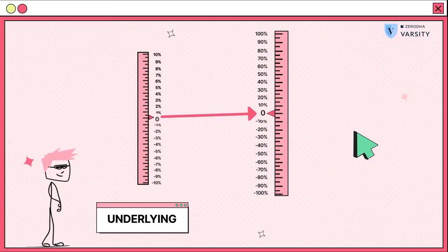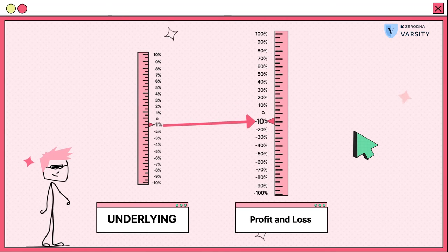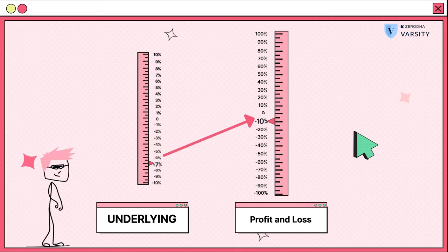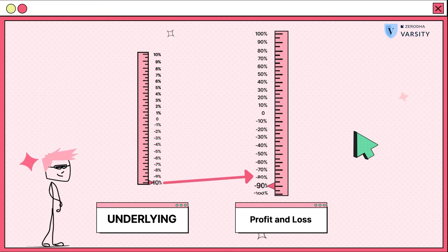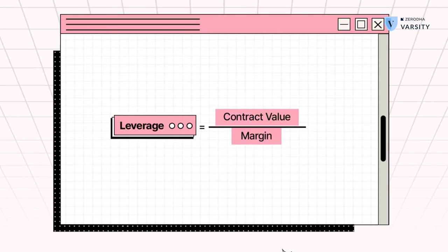This means for every 1% move in the underlying, you will experience a 10% profit or loss on your initial investment. So a 10% movement here can actually mean a complete wipe off of your initial margin money. And one way to actually get to this number very quickly is by doing this simple calculation.